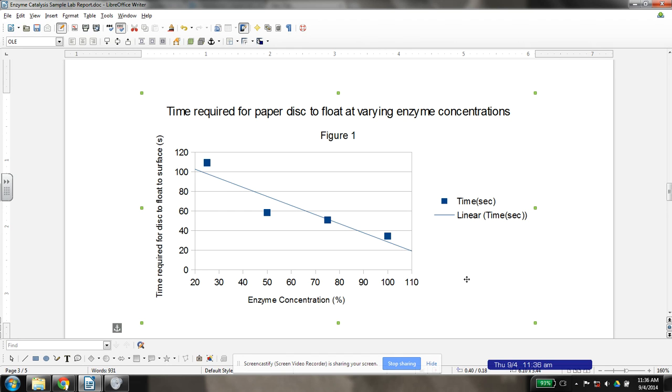So in this graph, we can see that our enzyme concentration, as it went up, the time it took for the little piece of paper to float to the surface went down. So there is an inverse relationship here. That would be basically describing a trend in the data.